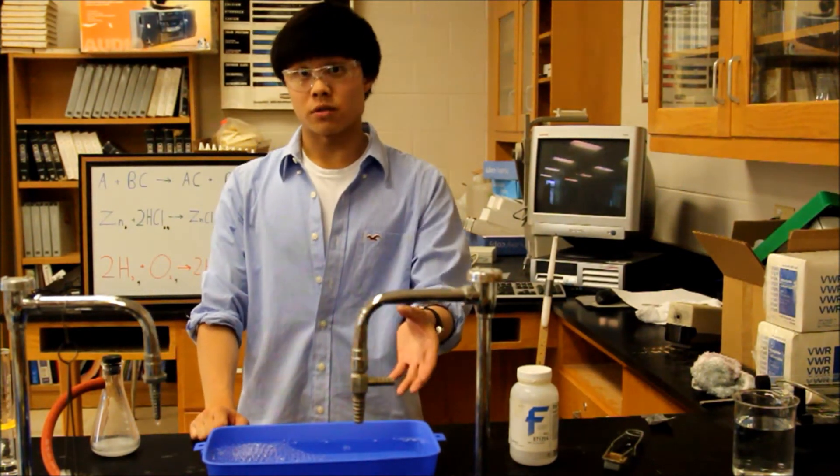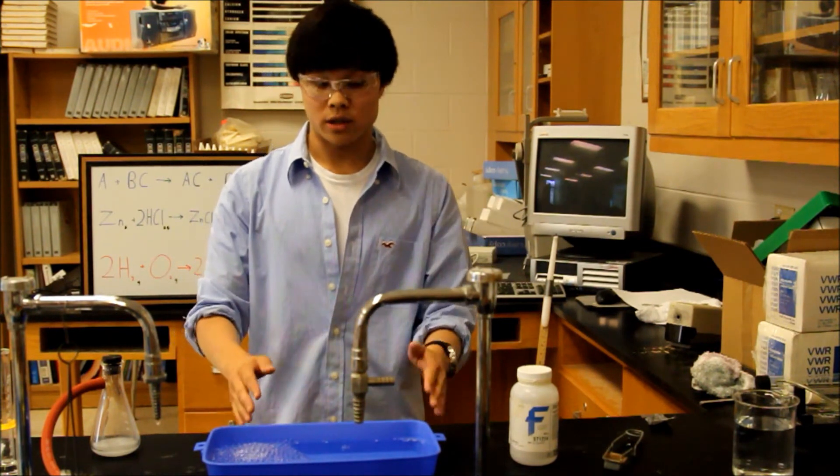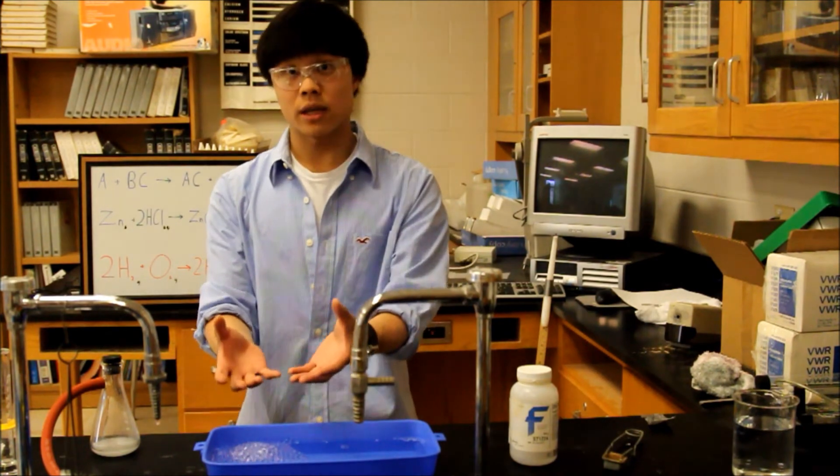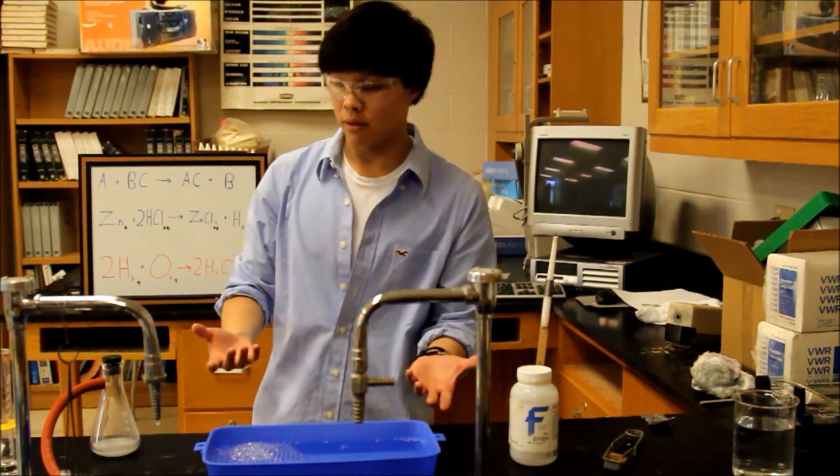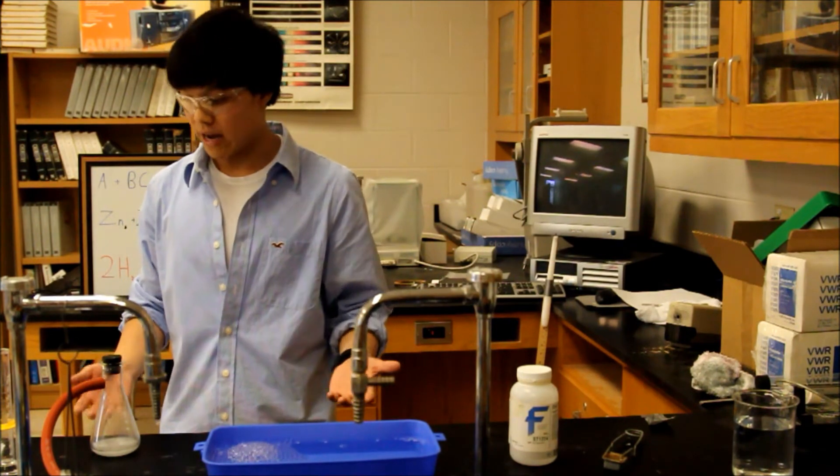You may be wondering what the dish soap was for. The dish soap creates a level of high surface tension inside the gas collection tub, keeping the bubbles in line so we can light them on fire, rather than having the hydrogen go straight up into the air, as it's a lighter-than-air gas.